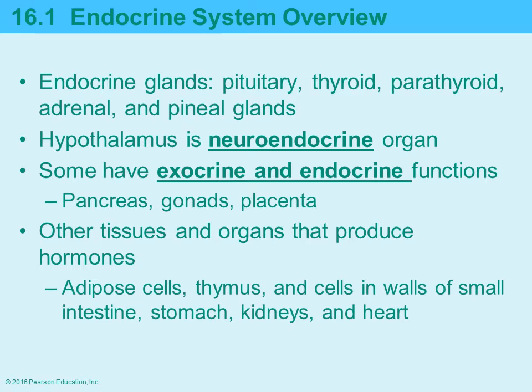There are several different endocrine glands, such as the pituitary, thyroid, parathyroid, adrenal, and pineal glands. The hypothalamus is classified as a neuroendocrine organ because it functions in both the nervous system and the endocrine system. Some glands have both exocrine and endocrine functions, such as the pancreas, the placenta, and the gonads. Other tissues that can also produce hormones include adipose cells and the thymus.